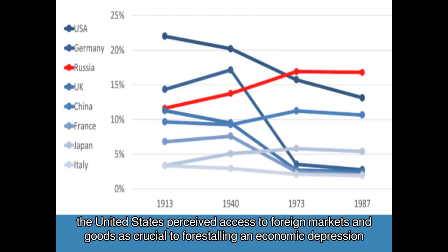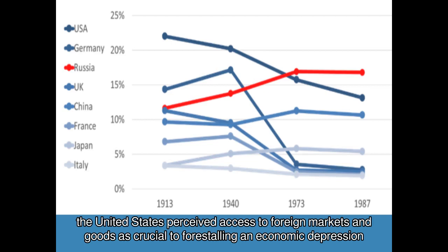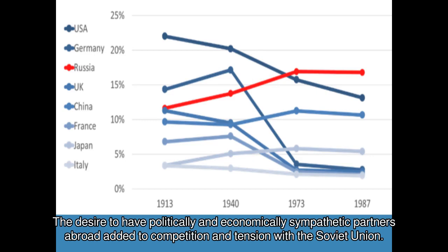Economic pressures: after the war, the United States perceived access to foreign markets and goods as crucial to forestalling an economic depression and continuing American economic expansion. The desire to have politically and economically sympathetic partners abroad added to competition and tension with the Soviet Union.